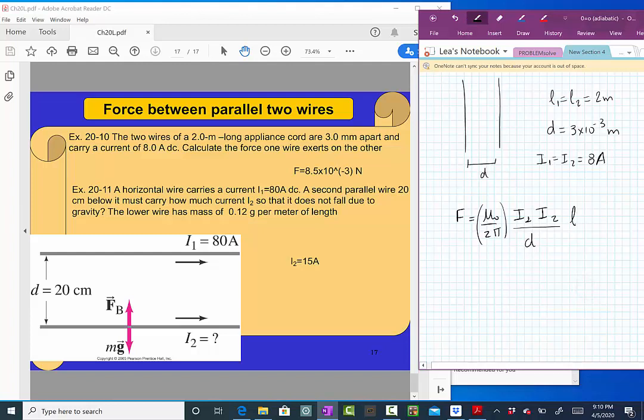And the length. Both have the same length, so it doesn't matter which one you choose, it's two meters, and that's it. And you're going to get this force. If everything is done correctly, it should be 8.5 times ten to minus three newton, if you be careful with the units.